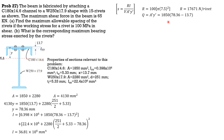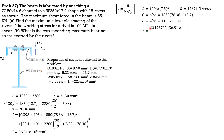Q equals area prime times y prime: Q = 1850 × (y − 13.7), which is the distance of the centroid of the channel to the neutral axis. Therefore Q = 119,621 mm³. Substituting into the formula with maximum shear force V = 65,000 N: s = (2 × 17,671 × 36.81 × 10⁶) / (65,000 × 119,621). Solving, s = 167.3 mm.